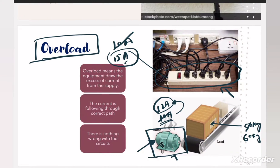From this discussion we can say that in an overload condition there is nothing wrong with the circuit. The circuit is healthy, and the current is flowing through the desired path — the correct path. The current is not flowing through any undesired path. The excess current flowing is more than the rated current of the equipment, which will lead to wear and tear in the long run.